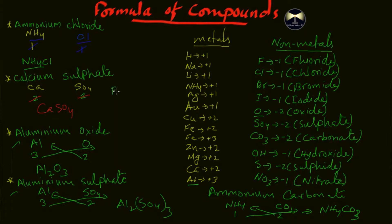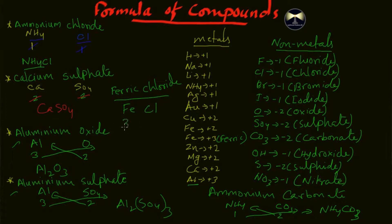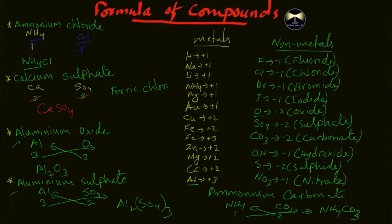Let's discuss ferric chloride. In my previous videos I explained that 'ferric' means iron with a plus three oxidation state. So write the symbol for iron, Fe, and for chlorine, Cl. Assign an oxidation state of three to iron and one to chlorine, then cross multiply — the formula is FeCl3.